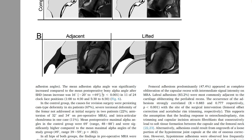Let me show you this on the nice images here. You can see the adhesion between the joint capsule and the labrum. They made the differentiation between 'adjacent' — if it's just adjacent — or if the labrum is lifted up onto the joint capsule. There might be a clinical difference, because a labrum that is lifted up certainly does not have a sealing function anymore, while one that is merely adjacent might still be okay.